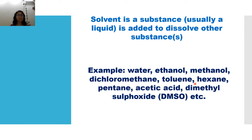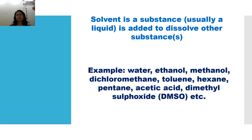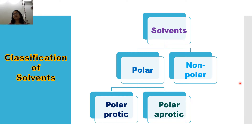Solvent is an important thing for chemical reactions, but we have to be particular about which type of solvent is needed for a particular reaction. Solvents can be classified into two types: polar solvent and non-polar solvent. Polar solvents are again classified into two types: polar protic solvent and polar aprotic solvent.